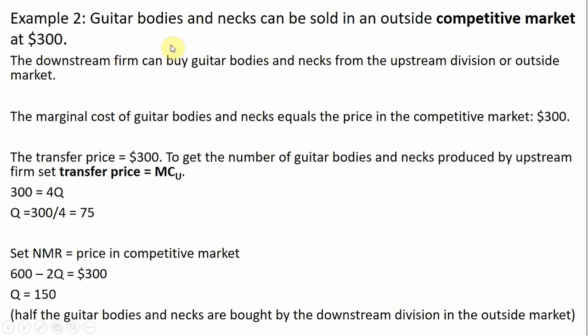Example two: guitar bodies and necks can be sold in an outside competitive market at $300. The downstream division now has the ability to buy guitar bodies and necks not only from its upstream division but also in the competitive market. The marginal cost of guitar bodies and necks equals the competitive price of $300, so the transfer price is just $300.